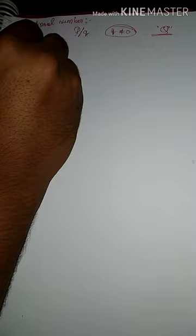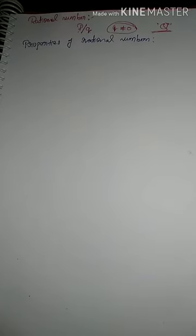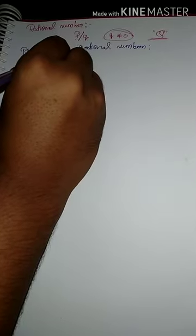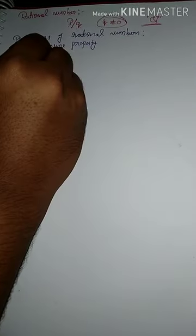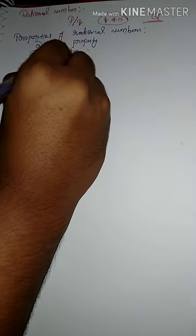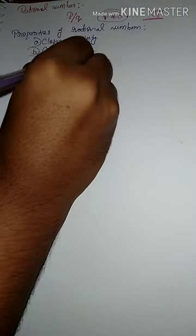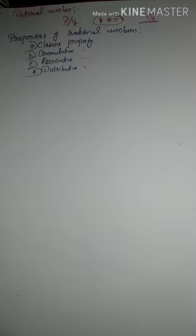Now we will discuss some properties of rational numbers. The major properties of rational numbers are: first, closure property; second, commutative property; third, associative property; and fourth, distributive property. Let us now study these properties in detail.